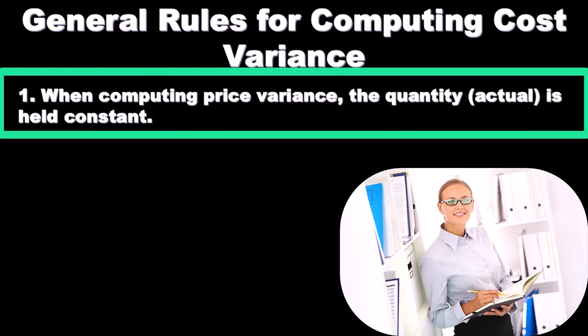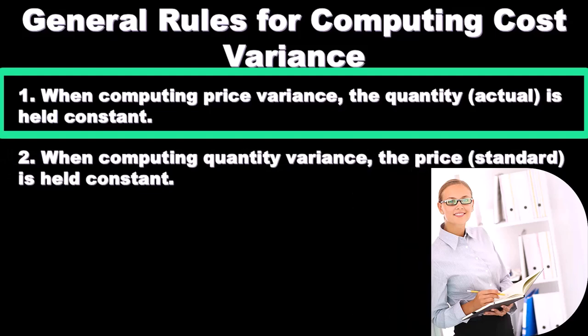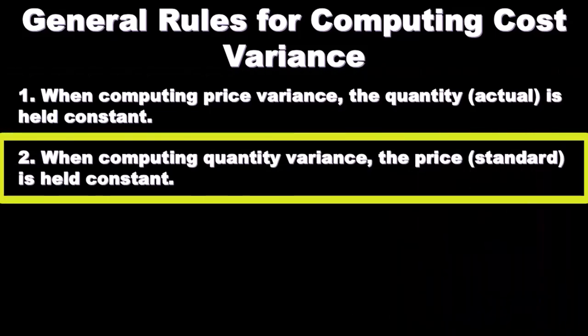Rule one: when computing price variance — the difference between the actual price and the standard price — the actual quantity is held constant. We hold the quantity constant as we look at the price variance, because we're trying to isolate the difference due to price.